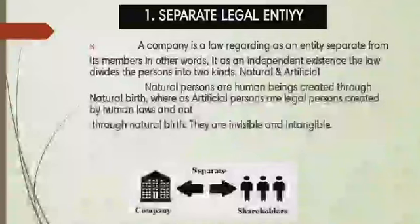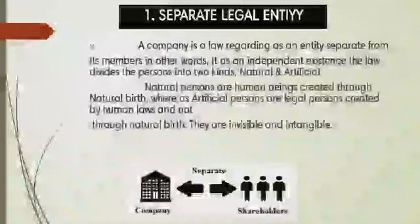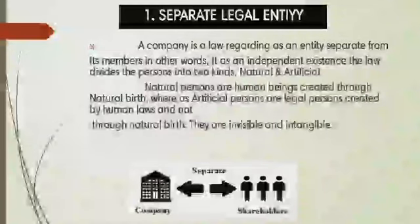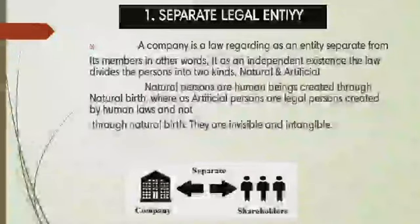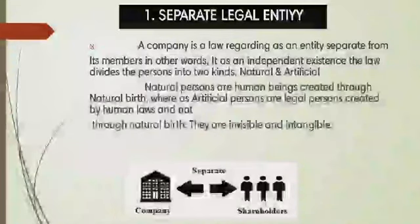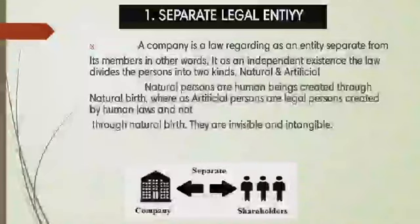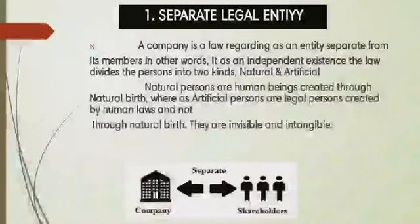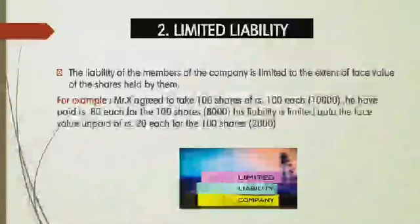The first one is separate legal entity. A company is registered by the members of the company. Even though it was registered by members, after registration, the company becomes an artificial person separate from its members, which is called separate legal entity. The company is a separate artificial person after registration.